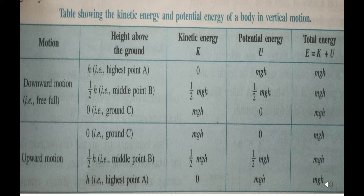Similarly, for upward motion: at ground level, height is zero, kinetic energy is mgh, potential energy is zero. At the midpoint, height is h/2, kinetic energy is ½mgh, potential energy is ½mgh. At the highest point, kinetic energy is zero and potential energy is mgh. Total energy at all points is mgh. From this table we can conclude that whether it is downward or upward motion, the total energy of the system remains conserved.